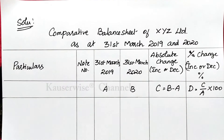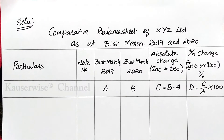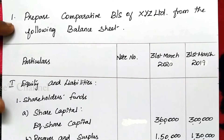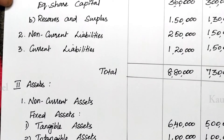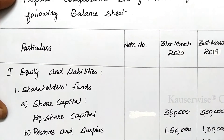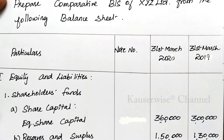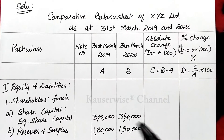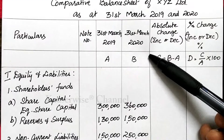First, enter all the liabilities and assets as per the problem in the particulars column. In the problem, current year data is given first and previous year next, but in our solution we must enter previous year information first, then current year information. We have entered all the liabilities and assets with their values for previous year and current year as per the problem. The next step is to find the absolute change — increase or decrease — by comparing current year data with previous year data.